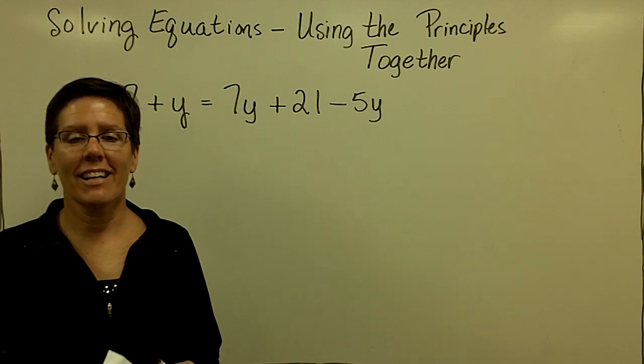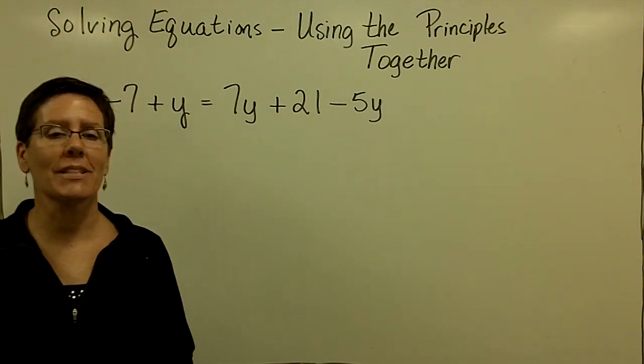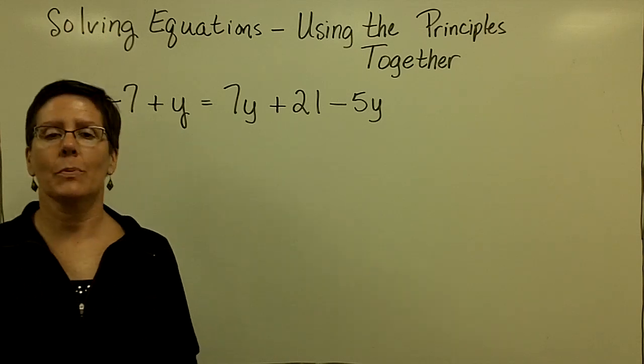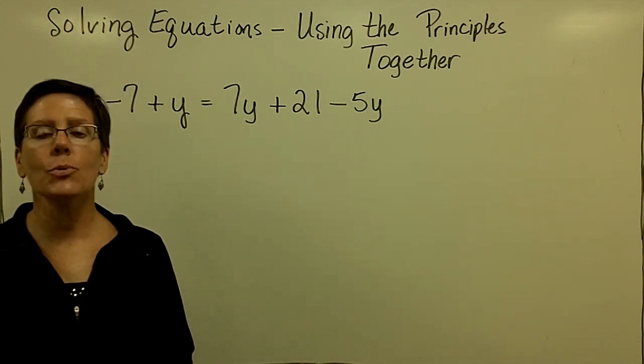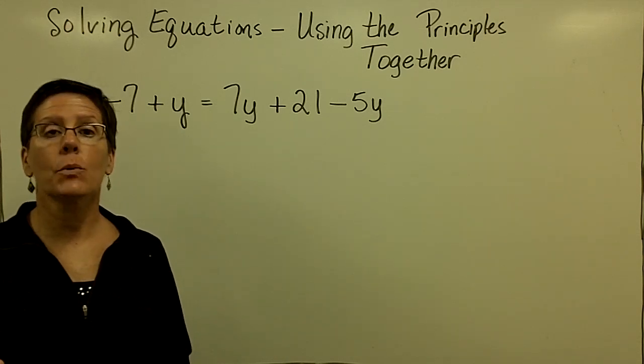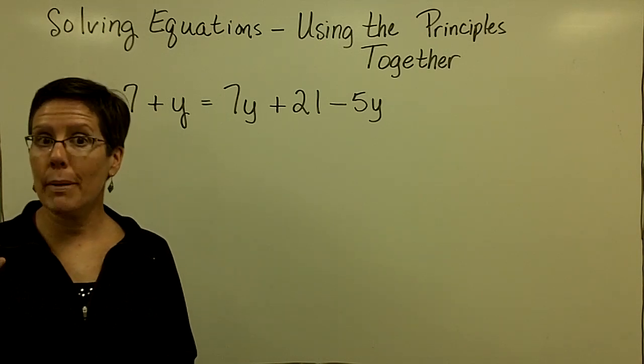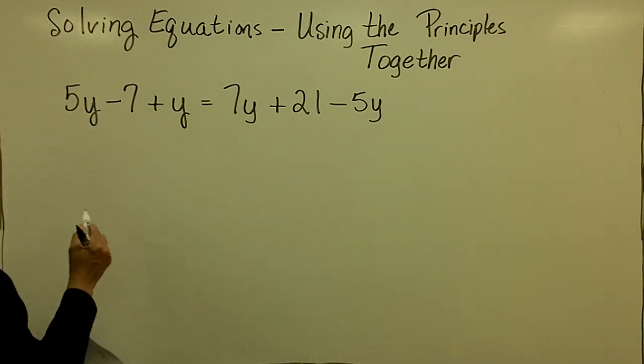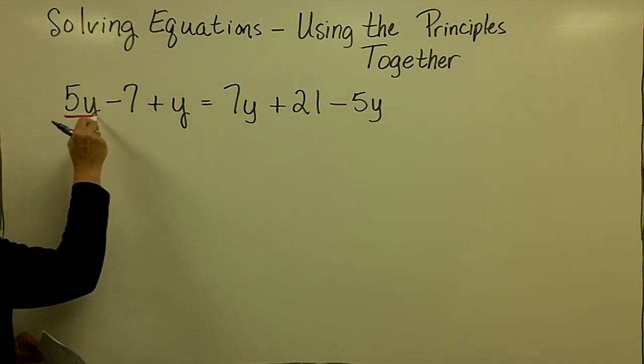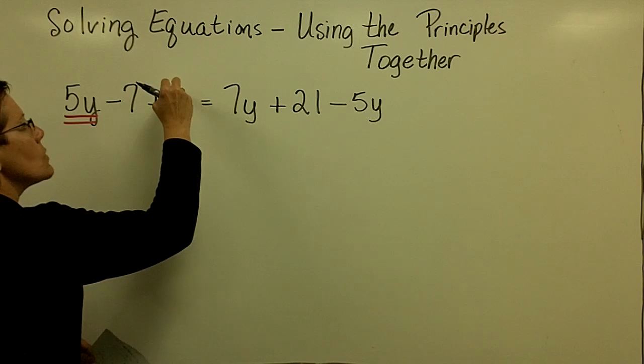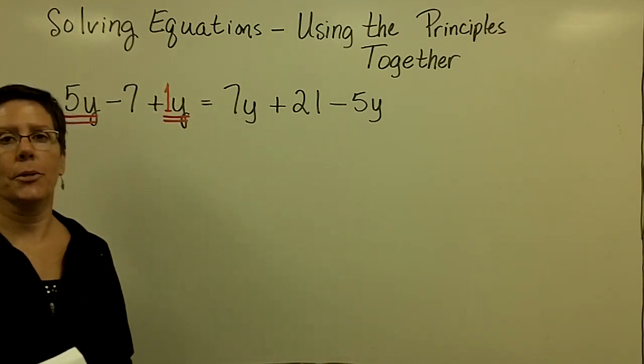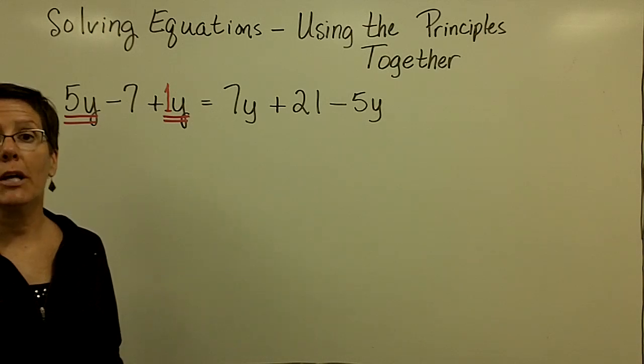The problems are getting a little bit larger. I have three terms on each side of the equal sign in this particular problem. Please pause when that's the case. If there are more than two terms on one side of the equal sign and we're solving basic linear equations, then there are like terms to be combined. So please do that first. So this 5y and this 1y are like terms and they must be combined before I go any further.